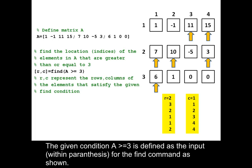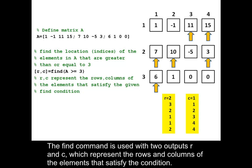The given condition A greater than equals 3 is defined as the input, with a parenthesis, for the find command as shown. The find command is used with two outputs R and C, which represent the rows and columns of the elements that satisfy the condition.